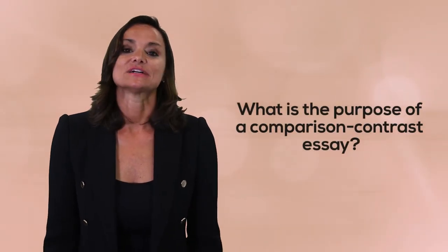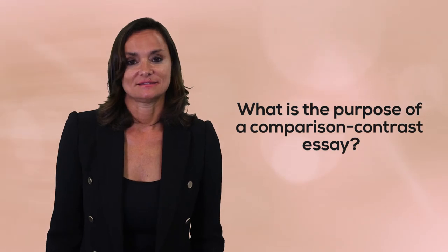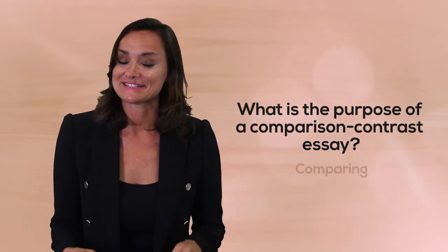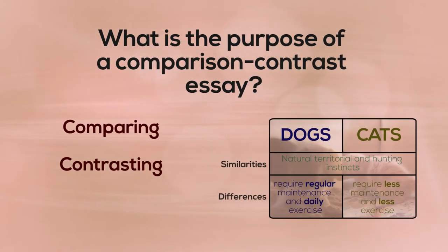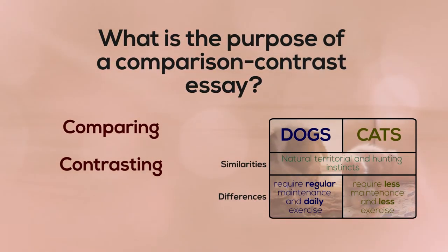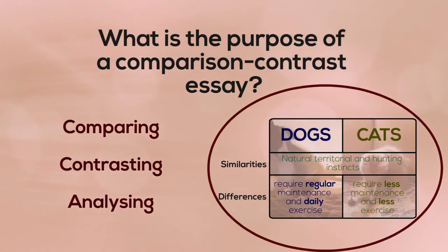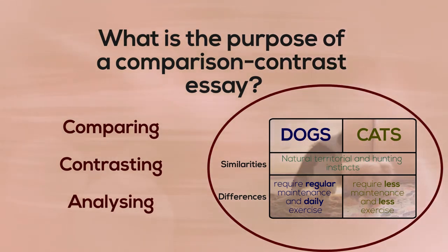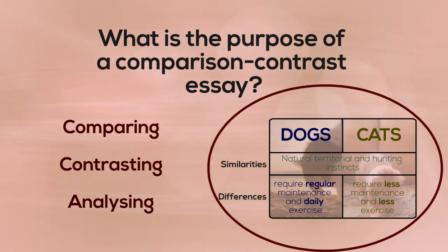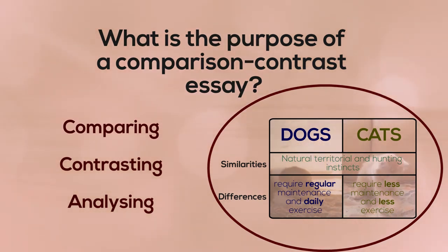Okay, so this brings us back to the question I asked at the beginning. What's the purpose of a comparison contrast essay? Well, you know about the similarities and differences. Now, once you have this information, you can then start to analyze it. For example, based on this evidence, which kind of household would cats be more suited for? And which households are more suited for dogs?